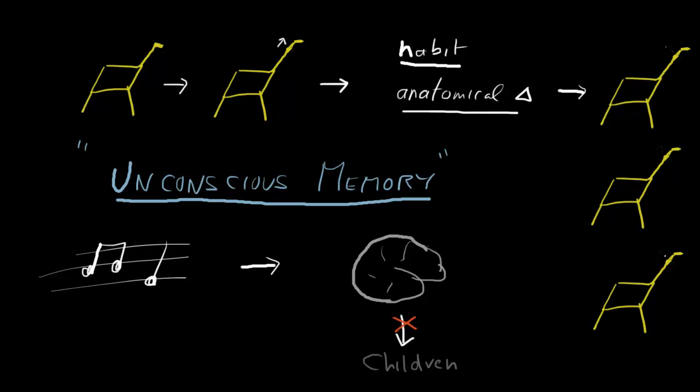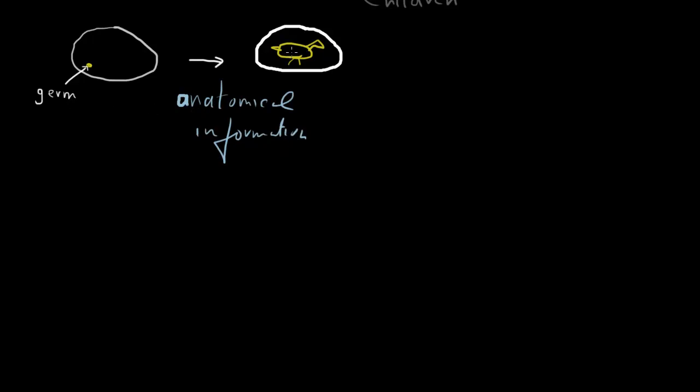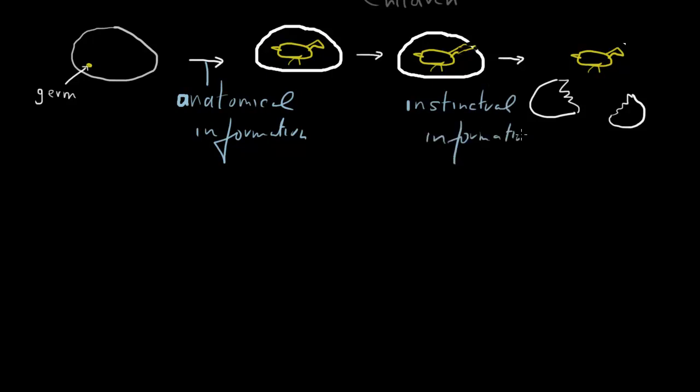Butler drew a parallel between this and the unlearned behavior or foreknowledge of a newborn chick. Here is an egg with a fertilized germ which developed into a baby chick. That is, there is an expression of anatomical information. Information held in the germ is expressed in anatomical terms. But now the chick wants to get out of the egg, so it pecks at the shell and makes a hole and escapes. And immediately it knows how to walk. So in addition to anatomical information, it has now expressed instinctual information. It has the instinct to peck at the egg and it has the instinct to walk.